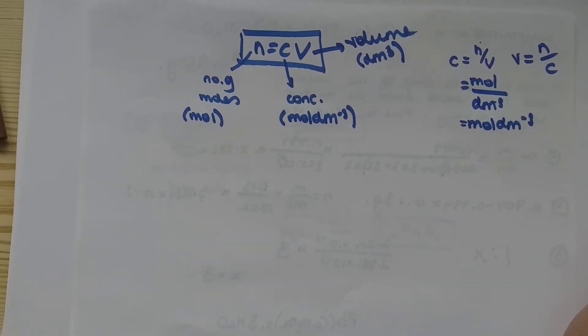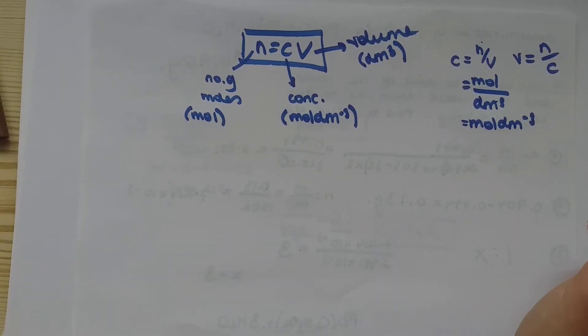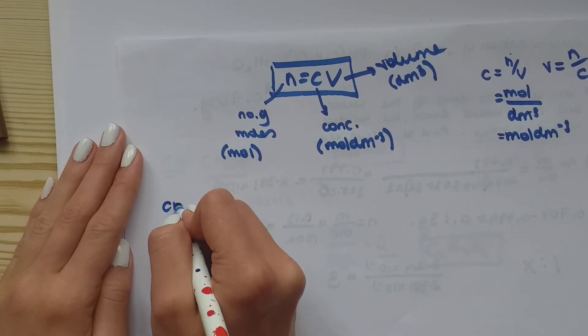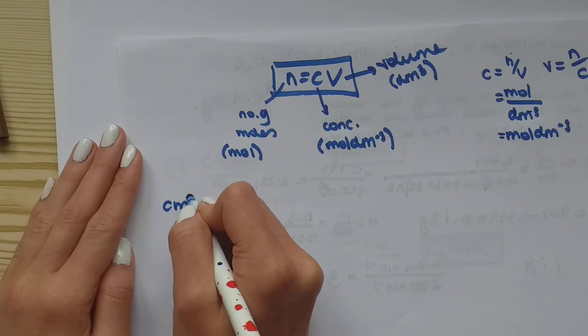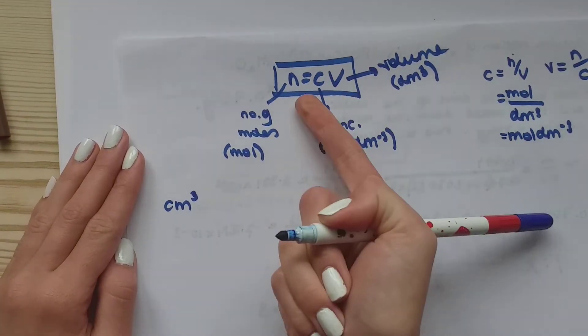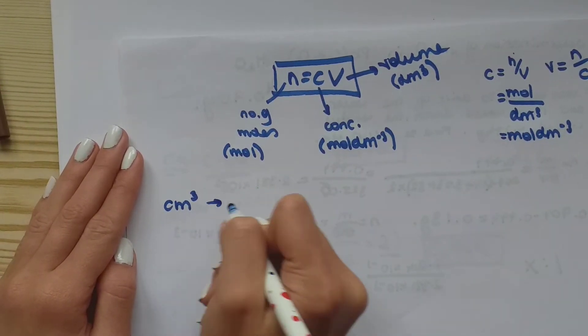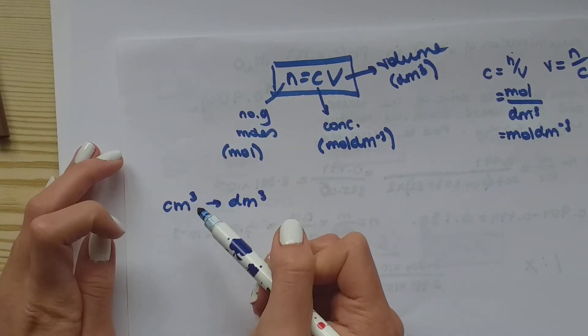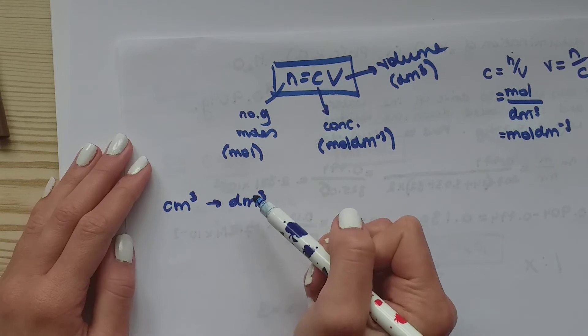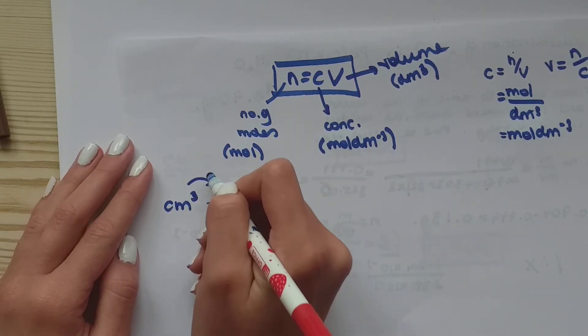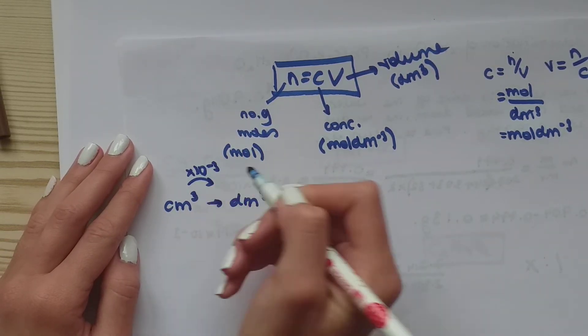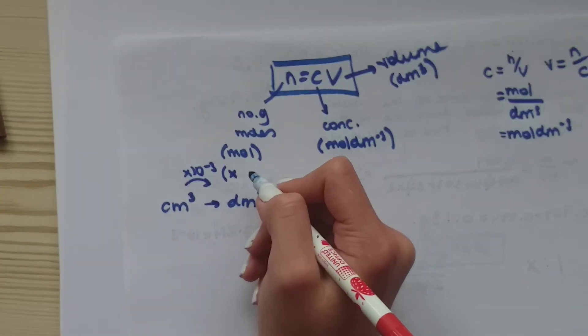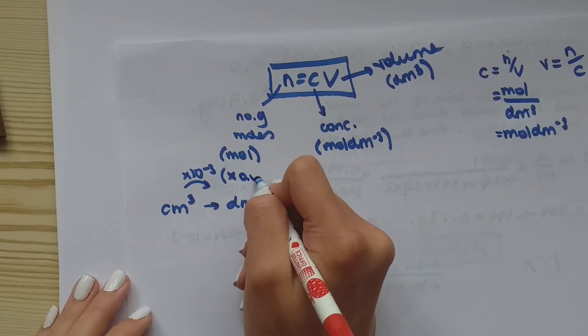So let's try and actually before we try an example together, sometimes in your exam questions, you might be given a volume in centimeters cubed. But before you can use this equation, you have to transfer it into decimeters cubed. So if you're given centimeters cubed, in order to find the decimeters cubed, you have to times it by 10 to the minus three. So basically it's times 0.001.